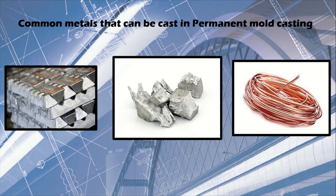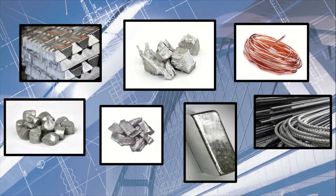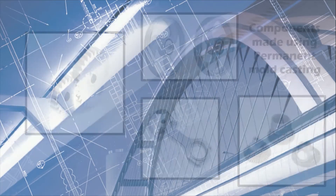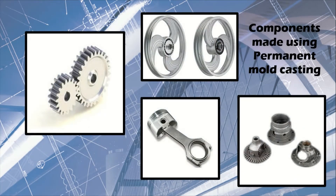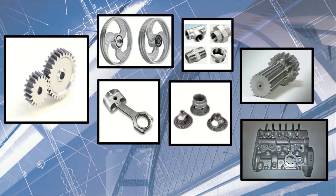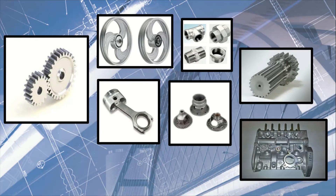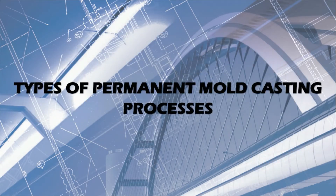The most common process uses gravity to fill the mold with molten metal; however, gas pressure or a vacuum are also used. Common casting metals are aluminium, magnesium, and copper alloys. Other materials include tin, zinc, and lead alloys. Iron and steel are also cast in graphite molds. Components such as gears, splines, wheels, gear housings, pipe fittings, fuel injection housings, and automotive engine pistons can be made using permanent mold casting.